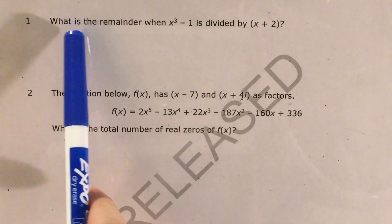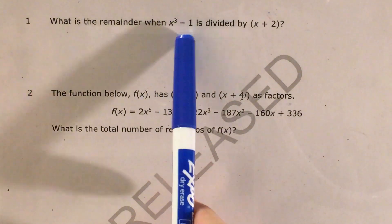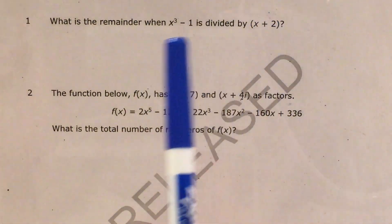We can see that we're just trying to find the remainder when the polynomial x cubed minus 1 is divided by x plus 2.